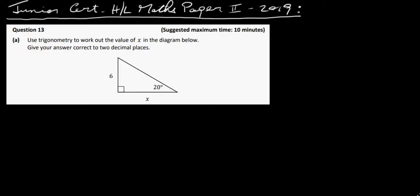Okay, so let's have a look at the Junior Certificate Higher Level Maths Paper 2 for 2019, questions 13 and 14. In the first question here, we're asked to use trigonometry to work out the value of x in the diagram below. Give your answer correct to two decimal places.